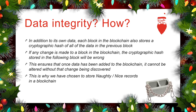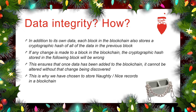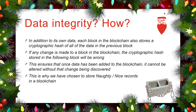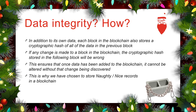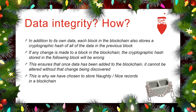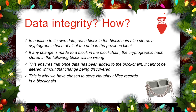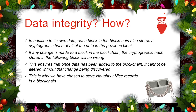How does a blockchain provide data integrity? It's actually very simple. In addition to its own data, each block in the blockchain also stores a cryptographic hash of all of the data in the previous block. If any change is made to any block in the blockchain, it will be immediately obvious because the cryptographic hash stored in the following block will be wrong. And the cryptographic hash in every block following the changed block will be wrong. This ensures that once we've added data to the blockchain, it can't be altered or removed without that change being evident.